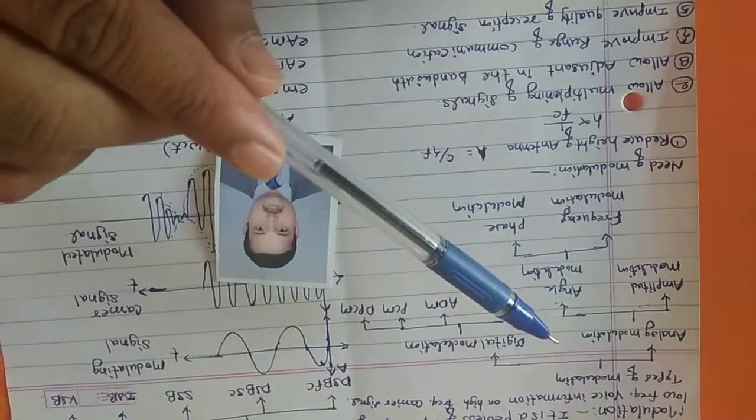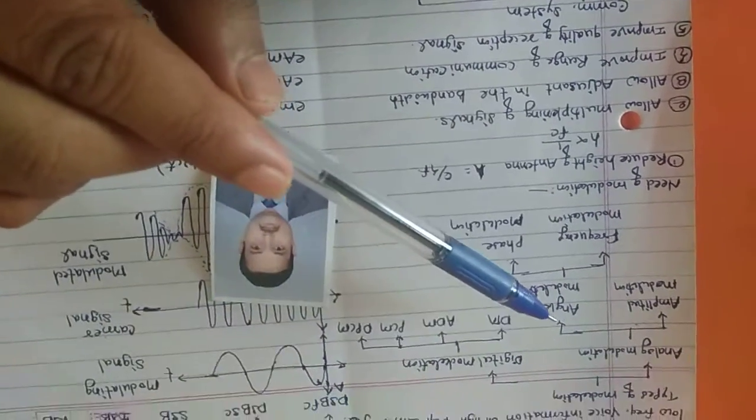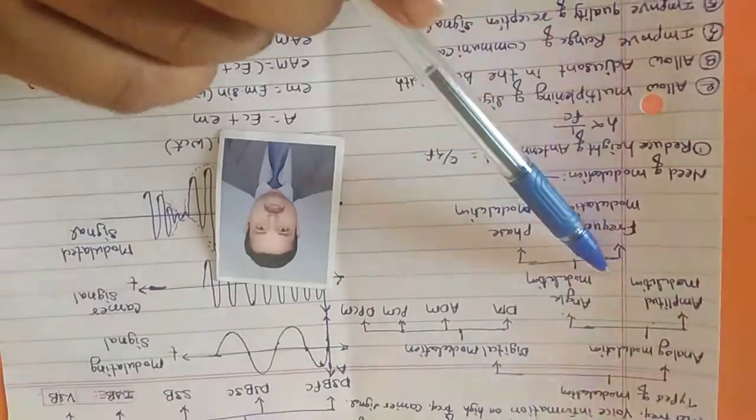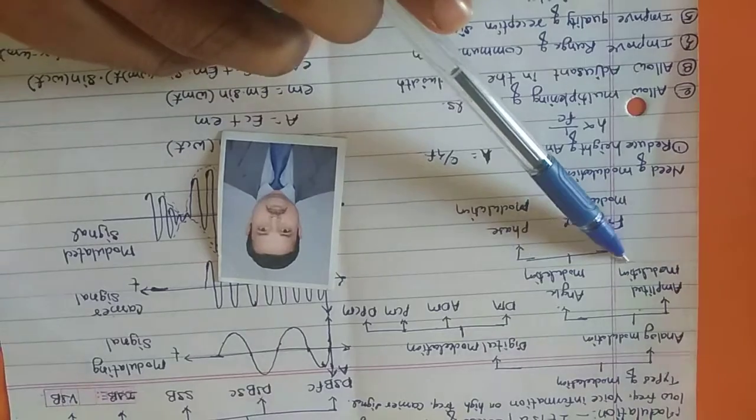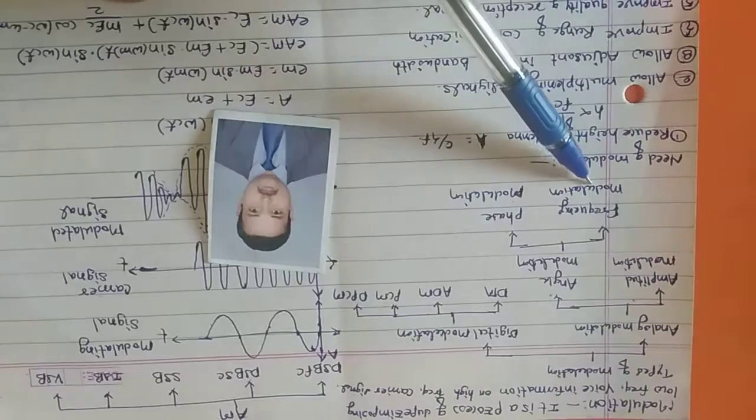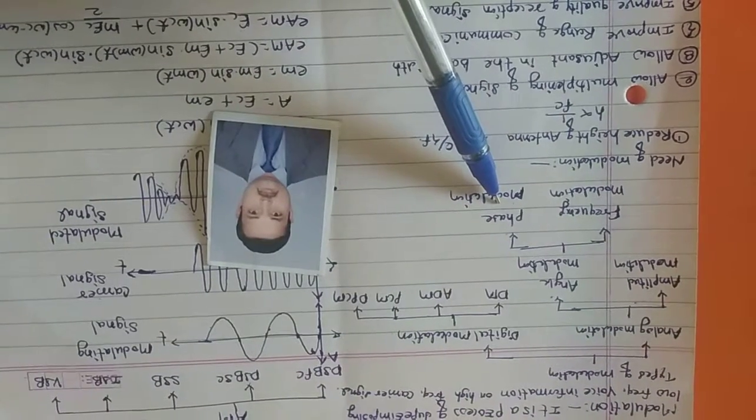So modulation is classified into two categories. First one is analog modulation and digital modulation. In analog modulation, there is AM or amplitude modulation and angle modulation. Angle modulation is classified into frequency modulation and phase modulation.